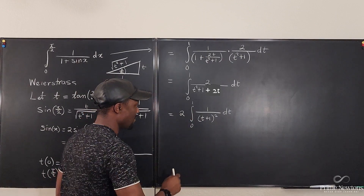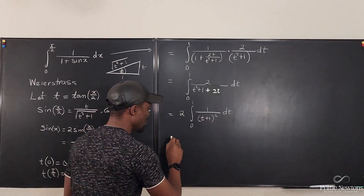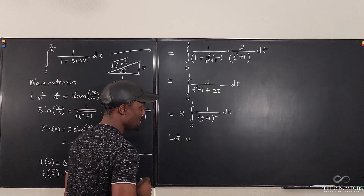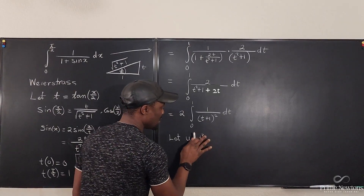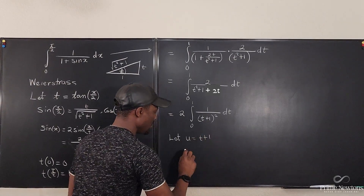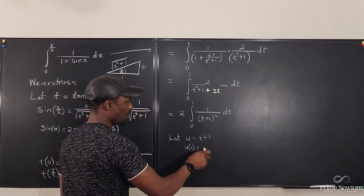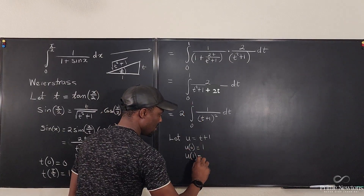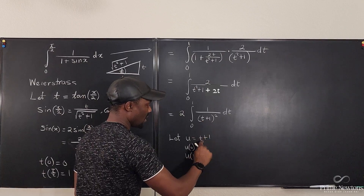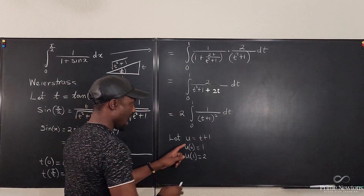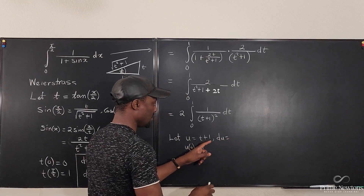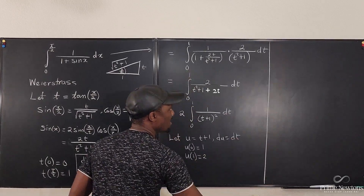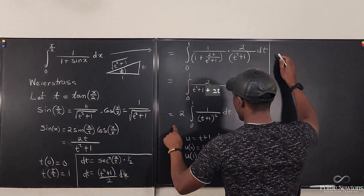Do a quick u-substitution. Let u equal t plus 1. Then u evaluated at t = 0 is 0 plus 1 = 1, and u evaluated at t = 1 is 1 plus 1 = 2. Also, du equals dt. So the new limits are 1 to 2.